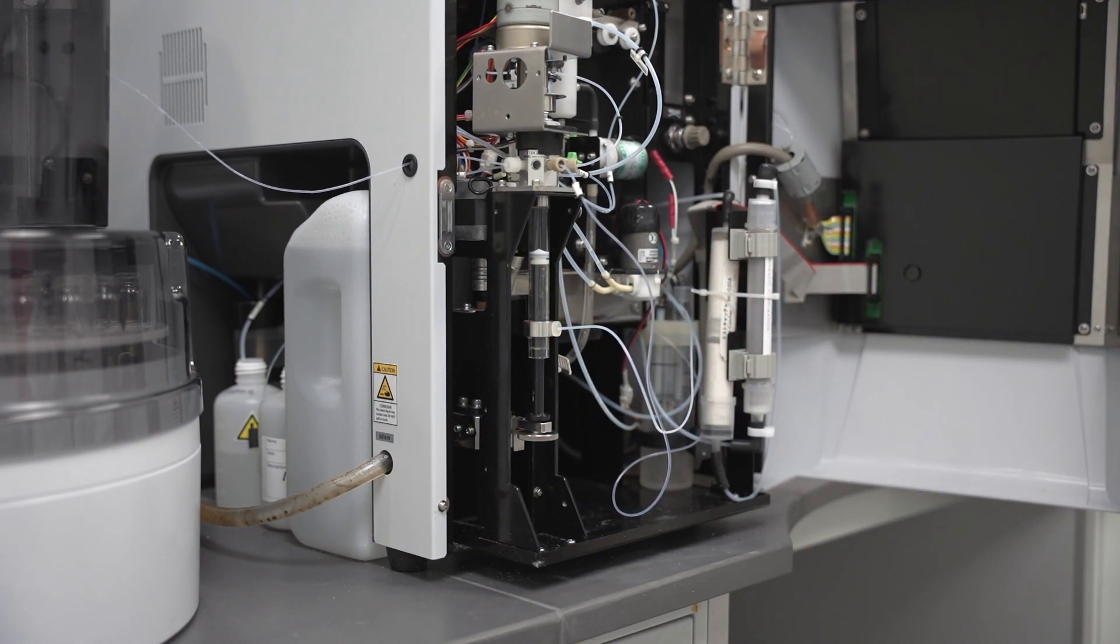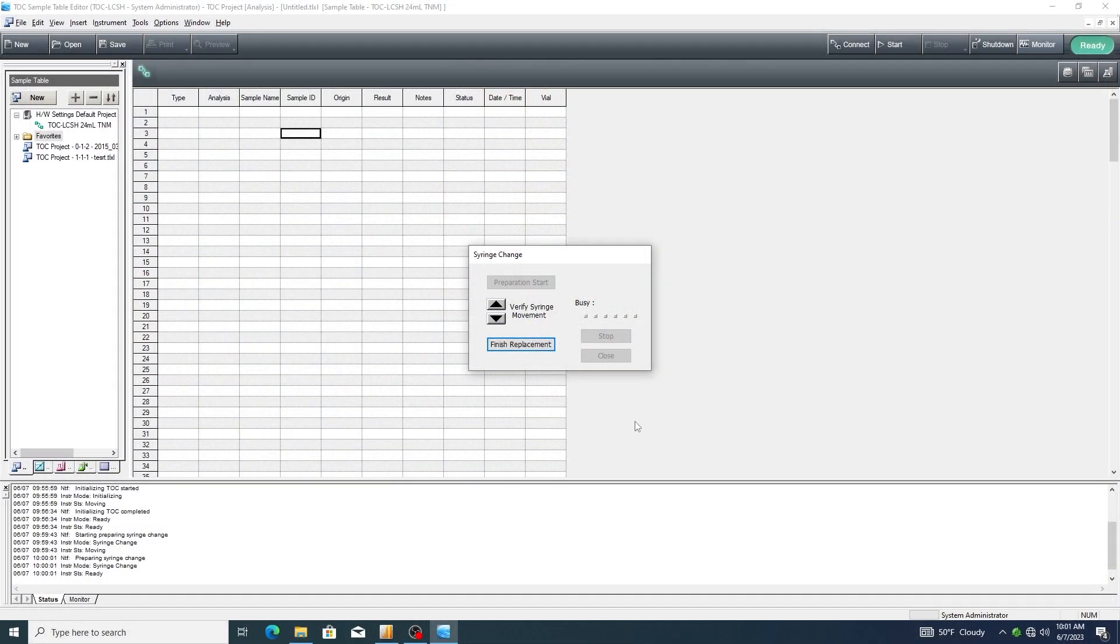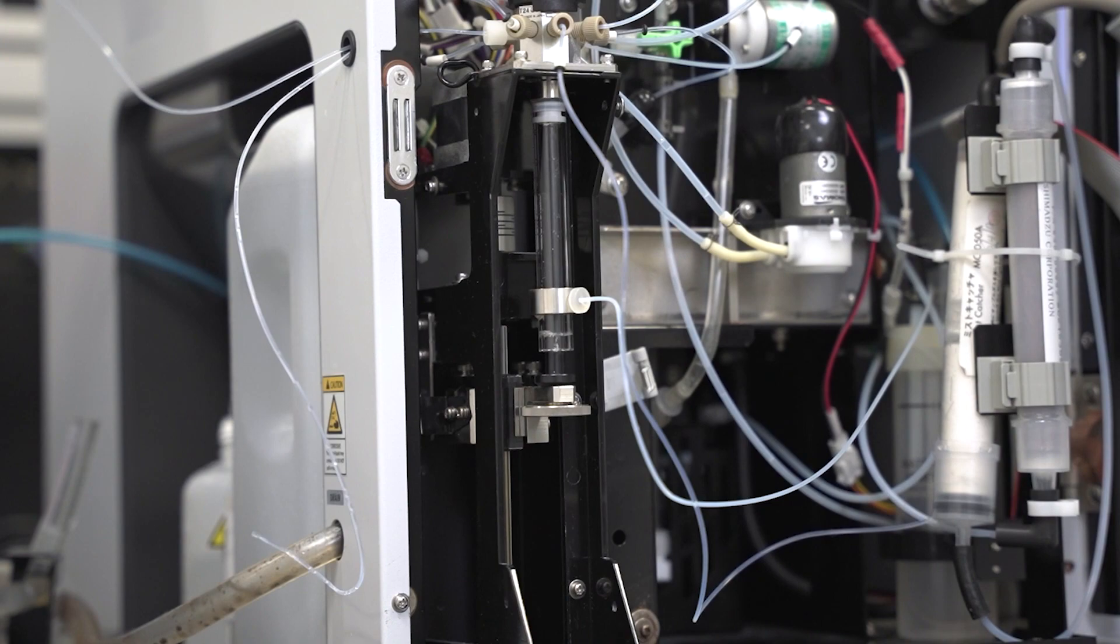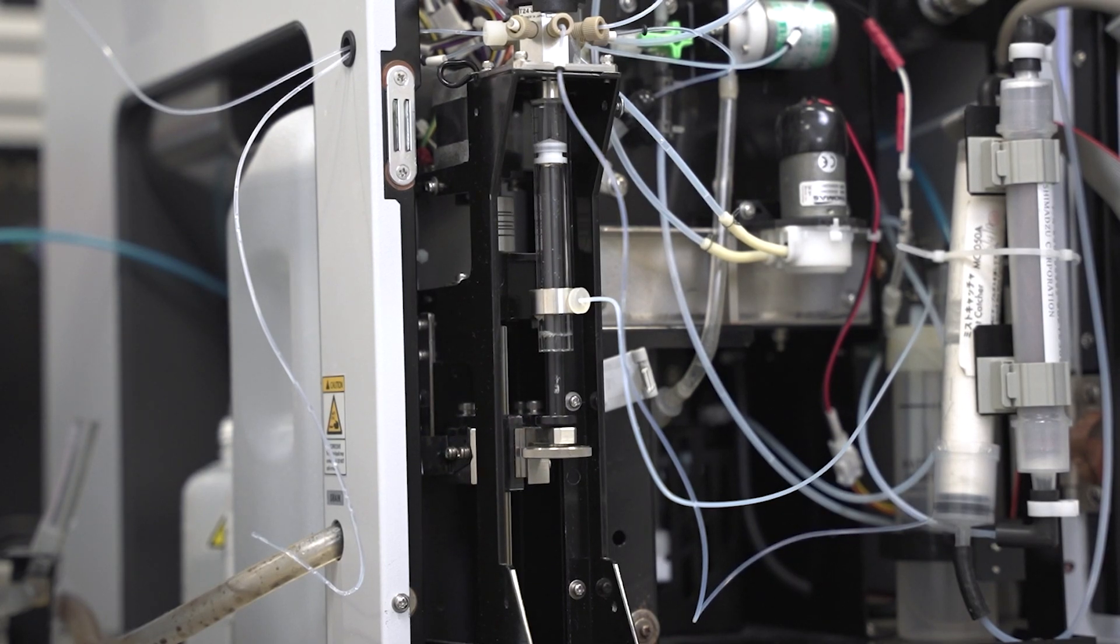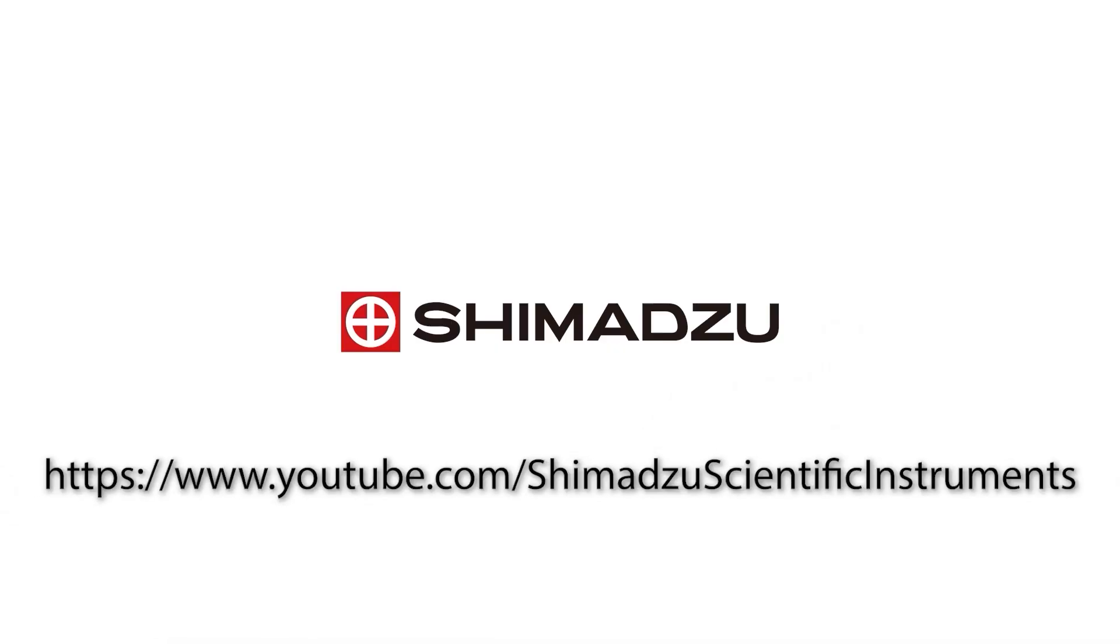Now that this is complete, you can select Finish Replacement. The instrument will perform the zero-point-detect procedure used to calibrate the syringe.